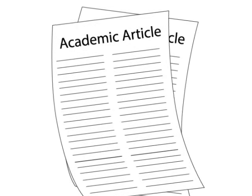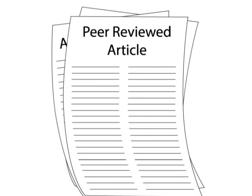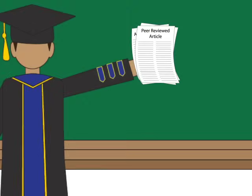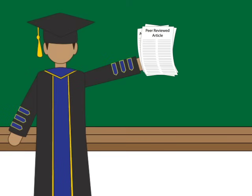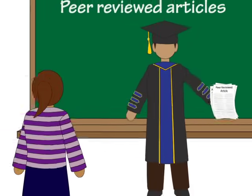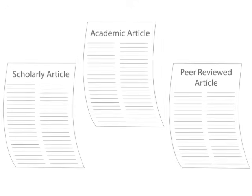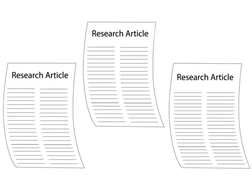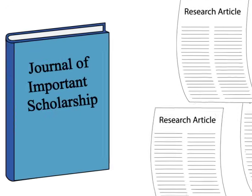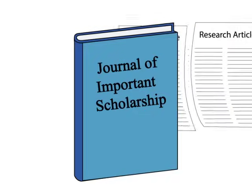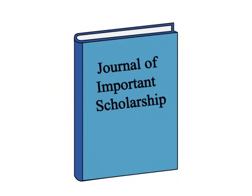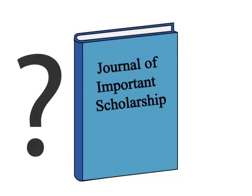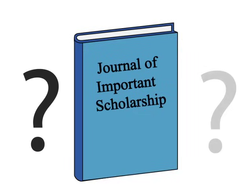Scholarly articles, academic articles, peer-reviewed articles. You may have heard these terms used by your professor, but what do they mean? Essentially, these are all different ways of describing the same thing, research articles that have been published in scholarly journals. But what is a research article, and how does it get published in a scholarly journal?